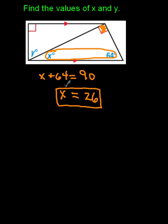So if I know one of the angles is 90, the other two angles must also have a sum of 90. So that means x plus 64 is going to equal 90. When I do my arithmetic, I subtract 64 from both sides, so I'll end up with x being 90 minus 64, which gives me 26. So that's my value for x.